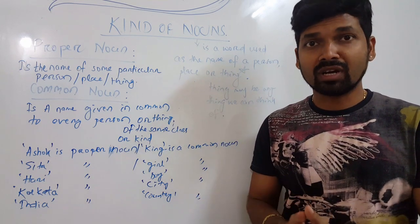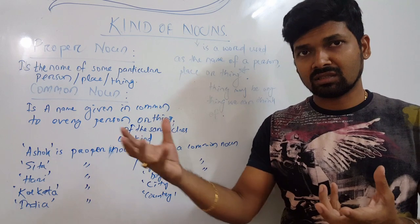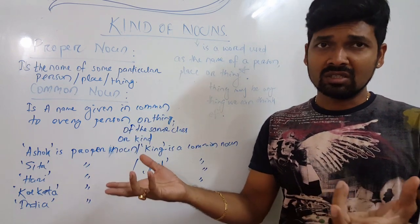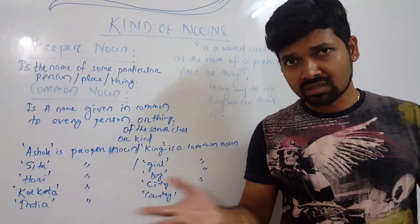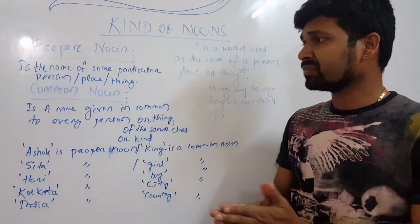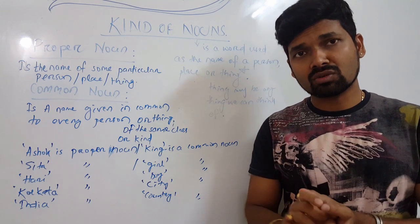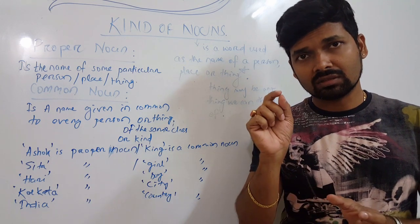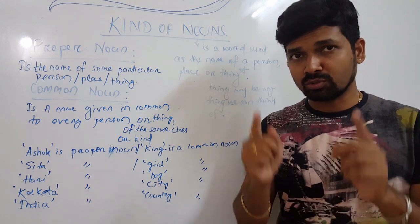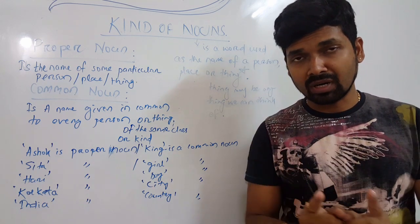King is a common noun, because 'king' is a common word — it can refer to any king. That can be Ashoka, that can be Chandragupta Maurya, or Kharawela, or anybody else. So 'king' is a common noun.